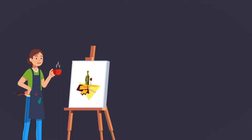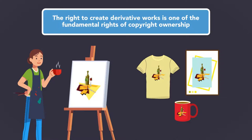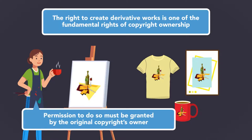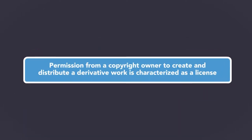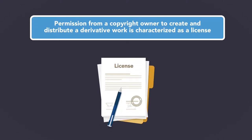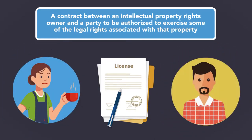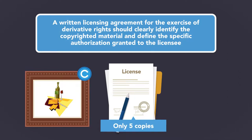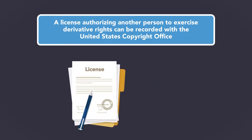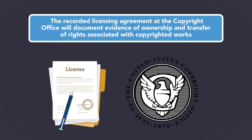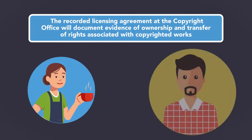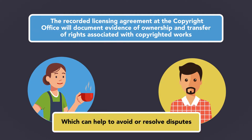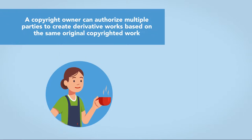The right to create derivative works is one of the fundamental rights of copyright ownership, so before anyone can create a derivative work based on a copyrighted work, permission to do so must be granted by the original copyright owner. Permission from a copyright owner to create and distribute a derivative work is characterized as a license — a contract between an intellectual property rights owner and a party authorized to exercise some of the legal rights associated with that property. A written licensing agreement for the exercise of derivative rights should clearly identify the copyrighted material and define the specific authorization granted to the licensee. A license authorizing another person to execute derivative rights can be recorded with the United States Copyright Office, which will document evidence of ownership and transfer of rights associated with copyrighted works, helping to avoid or resolve disputes.